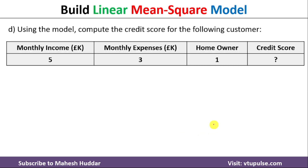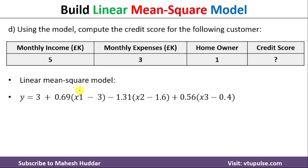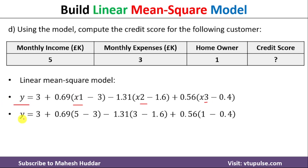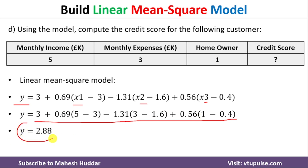Once we have the linear mean square model, we need to find the credit score for the new customer with x1 equal to 5, x2 equal to 3, and x3 equal to 1. We put those values into the linear mean square model — replacing x1 with 5, x2 with 3, and x3 with 1 — and solving the equation gives y equal to 2.88. This means the predicted credit score for this customer is 2.88.